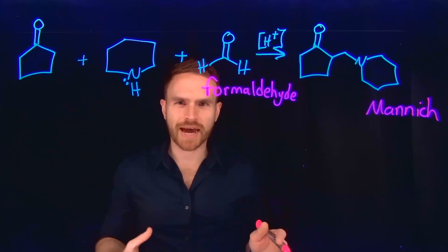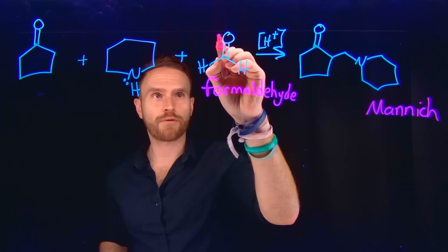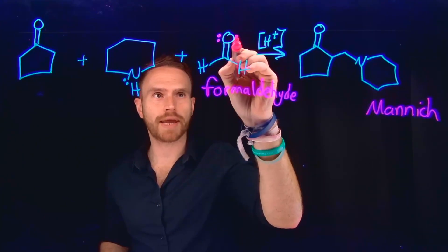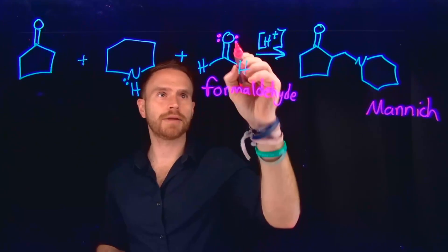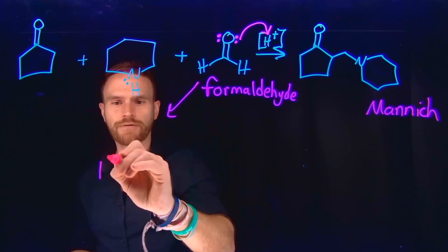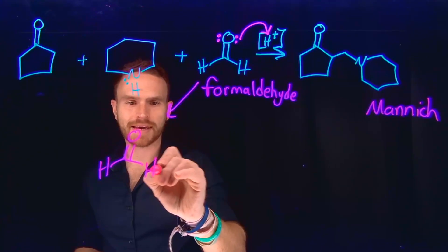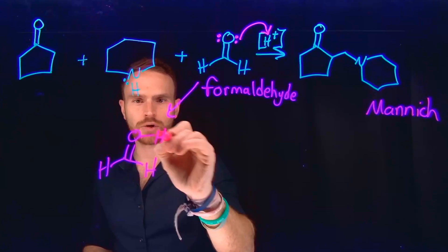You can also think of a Mannich reaction as like a mixed aldol reaction. So in a Mannich reaction, the typical first step is going to be to protonate the oxygen contained in formaldehyde. So upon protonation, what is being done is that you're effectively turbocharging the electrophilic carbon, making it incredibly susceptible to a nucleophilic attack.